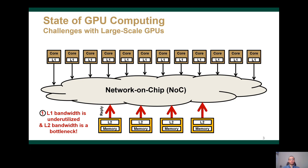Therefore, the on-chip L1 bandwidth is underutilized while the L2 bandwidth is bottlenecked. Also, due to the private nature of these many cores, each core can independently request data from the L2 while being oblivious to other cores' data. This leads to data replication across the cores' L1 caches.